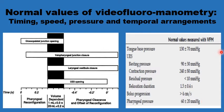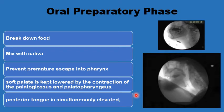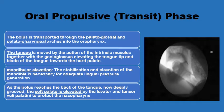The swallowing dynamics start when a bolus enters the oral cavity. It is well prepared by chewing, breaking down the food and mixing it with saliva. The important thing about the oral preparatory phase is that the segment between the base of the tongue and the palate prevents the premature escape of the bolus into the pharynx — so at this point, the base of the tongue is in contact with the soft palate. Once the bolus is well prepared, the next phase starts: the oral propulsive phase, which begins with the action of the tongue.